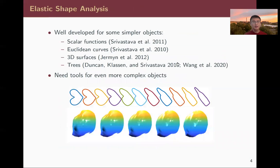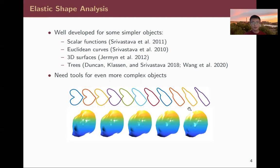This elastic shape analysis family has been quite successful over the past decades, but has only been applied to simple objects — either in the same topological class or with very similar topology. Examples include scalar functions, Euclidean curves, 3D surfaces, and trees. Here we have two examples of geodesics representing the shortest path under this elastic metric, for 2D curves and 3D surfaces.